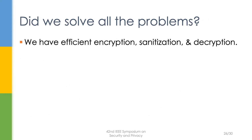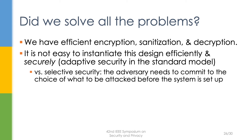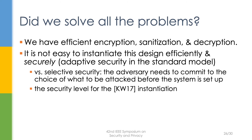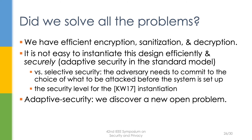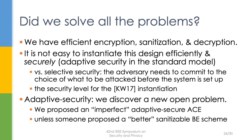We quickly highlight how encryption, sanitisation, and decryption are done efficiently. It turns out that instantiating our design efficiently and securely is still not easy. What we mean by security is adaptive security in the standard model. Our main scheme is selective security, which matches the security level of Kim and Wu's construction. For achieving adaptive security, we actually need to solve a new open problem. Nevertheless, using existing building blocks, we managed to propose an adaptively secure ACE — the details of which can be found in the paper.